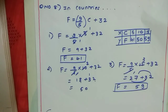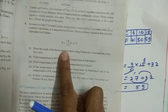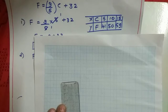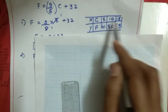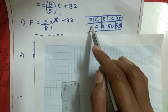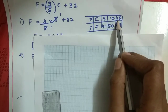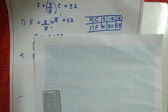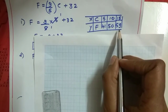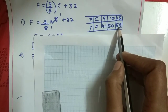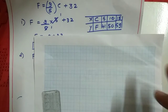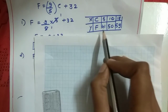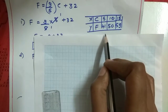Now let us draw the graph, since the first question asks us to draw the graph using Celsius for the x-axis and Fahrenheit for the y-axis. We have not taken any negative temperature, so we need positive axis coordinates. The highest x-coordinate is 15 and the highest y-coordinate is 59. We will take the scale as 1 centimeter equals 10 degrees Celsius on the x-axis and 1 centimeter equals 10 Fahrenheit on the y-axis.